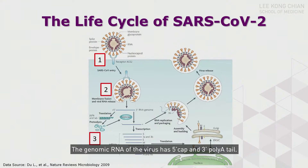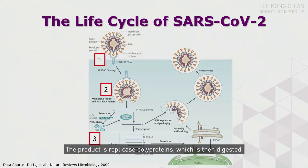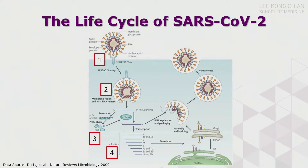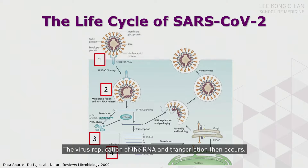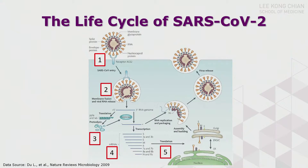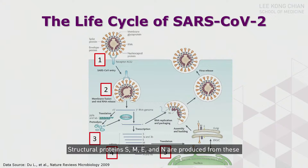The genomic RNA of the virus has a 5' CAP and 3' Poly-A tail; therefore, it can serve as mRNA for immediate translation. The product, replicase polyproteins, is then digested by viral proteases to release individual proteins. Virus replication of the RNA and transcription then occurs, generating more copies of genomic and subgenomic RNAs. Structural proteins S, M, E, and N are produced from these subgenomic mRNAs.